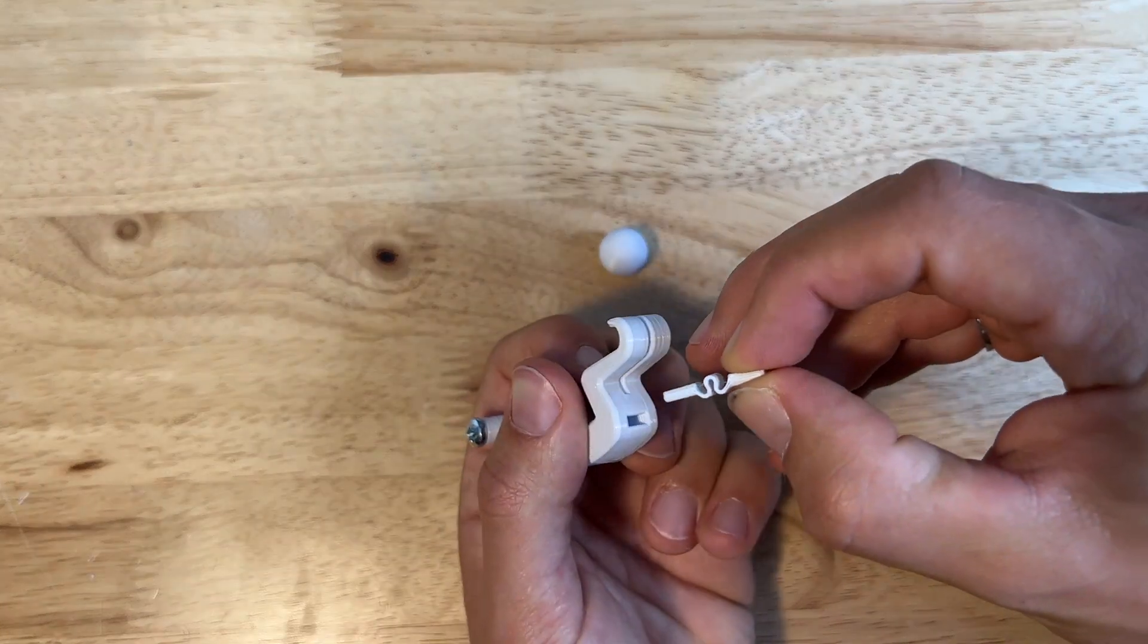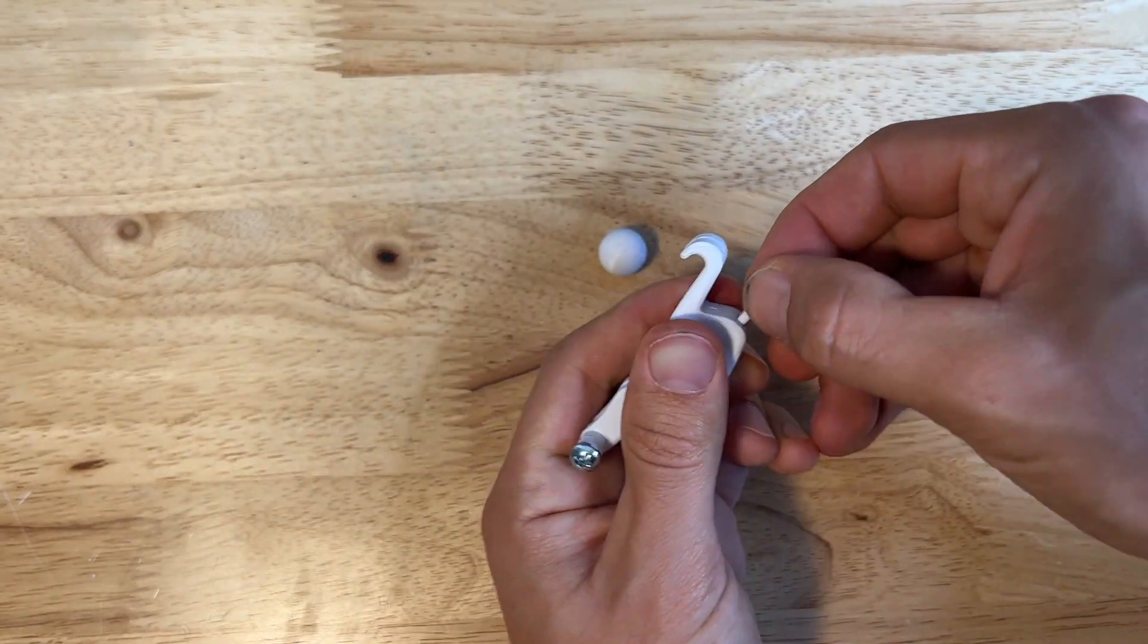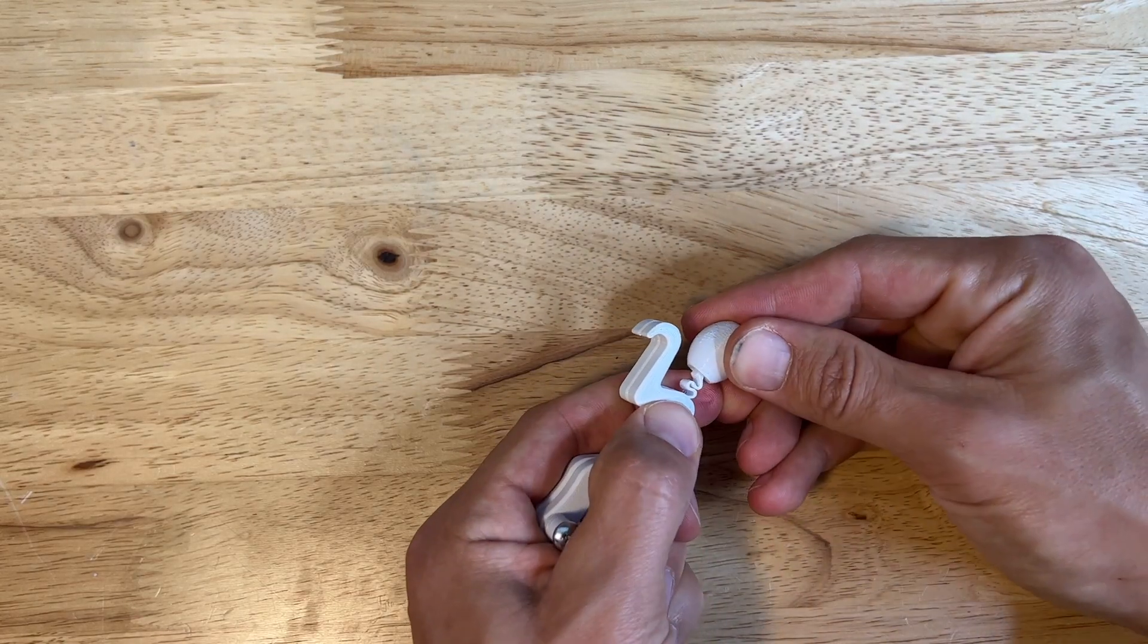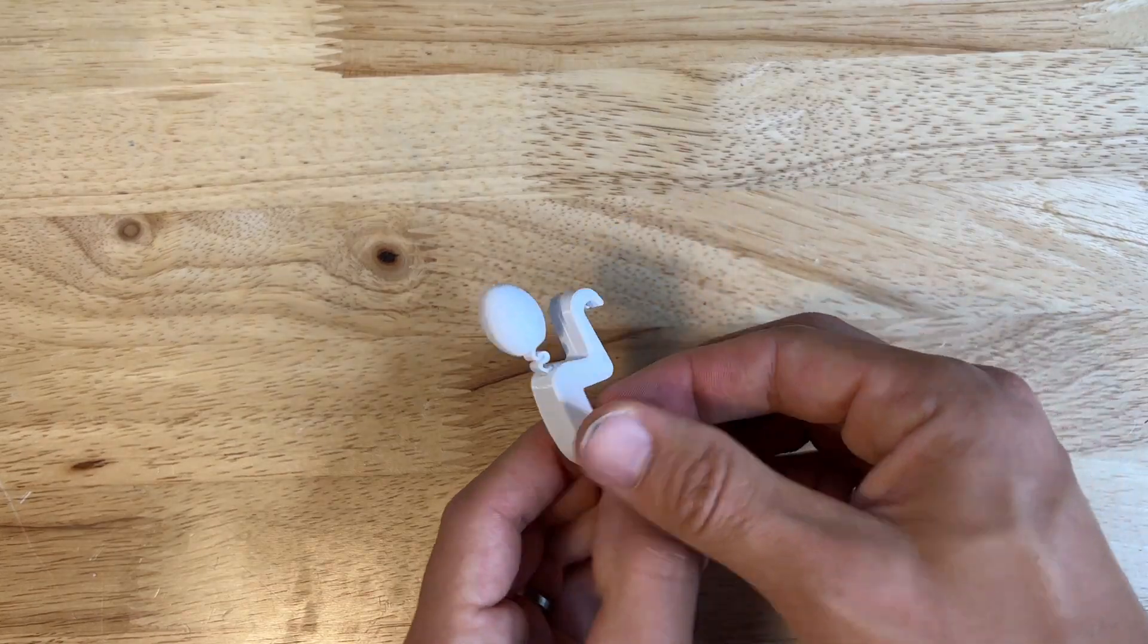The neck just press fits into the hole in the top of Bob's body. Push it all the way down and then do the same thing with the head on the top of the neck. Bob is now ready to work.